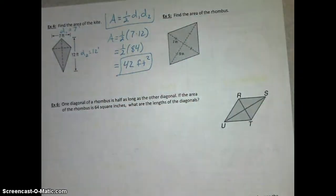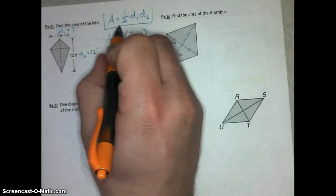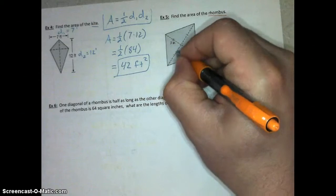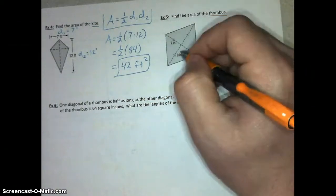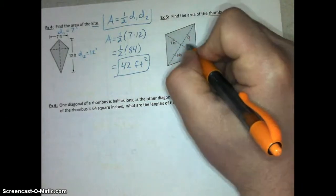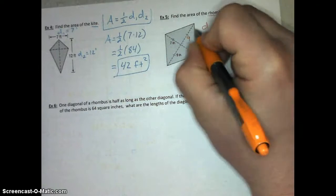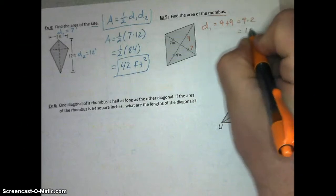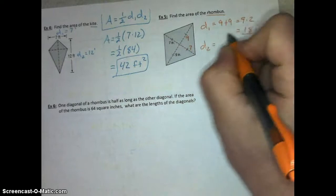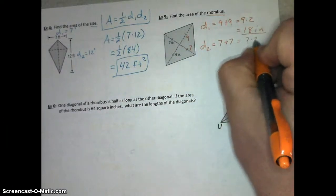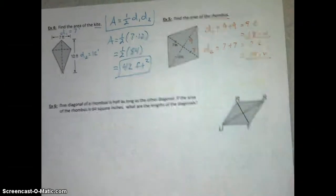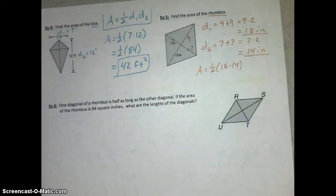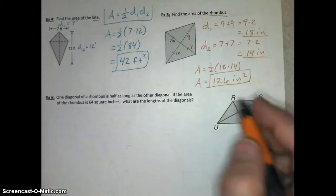For example 5, we can do that in a very similar fashion, except for the fact that the way this is drawn, it is a rhombus, but it uses the same formula. They give you that half of one diagonal is 9, half of the other one is 7, but remember that in a rhombus, diagonals bisect each other. So, if this is 9, so is this. And if this is 7, so is this. So, diagonal 1, I'm going to pick this longer one, is 9 plus 9, or 9 times 2, which is 18 inches. And diagonal 2 is 7 plus 7, or 7 times 2, which is 14 inches. We're going to do our area formula like this. 1 half of 18 times 14, which gives us an area of 126 square inches.